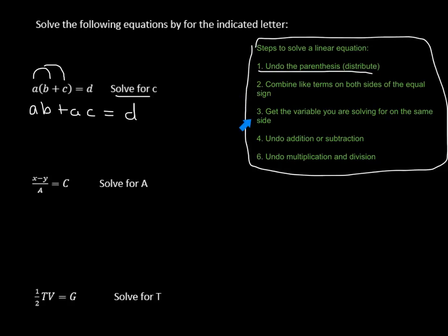It says get the variable you're solving for on the same side. Now it says undo any addition or subtraction. So what we're trying to do is get rid of this ab. So I'm going to minus ab, and we're going to minus ab. These cancel out, and we end up with ac equals d minus ab.